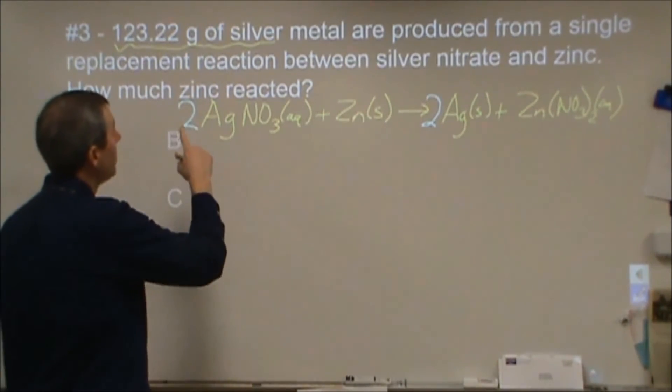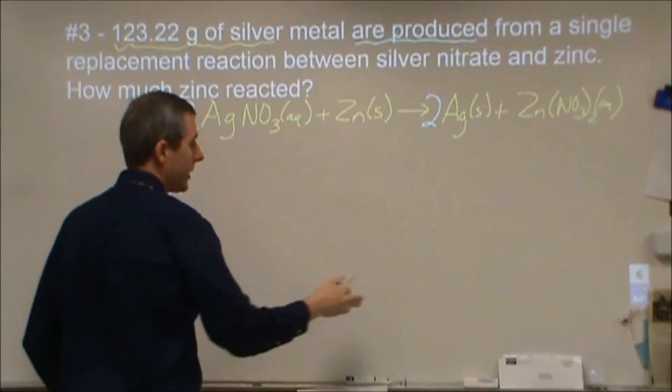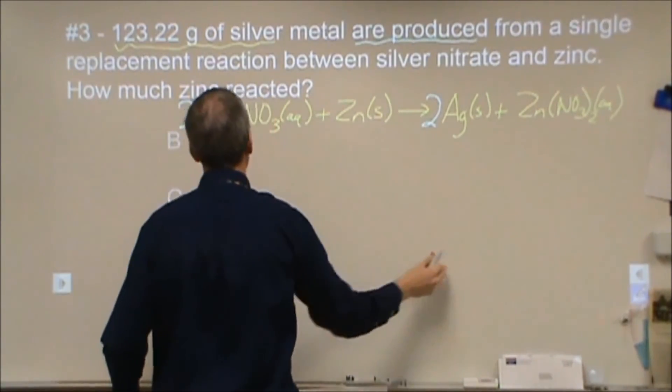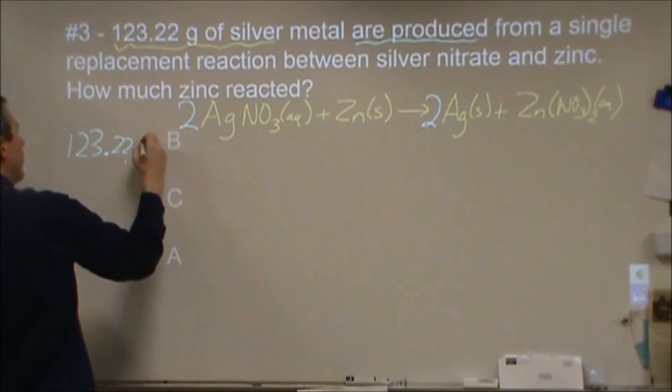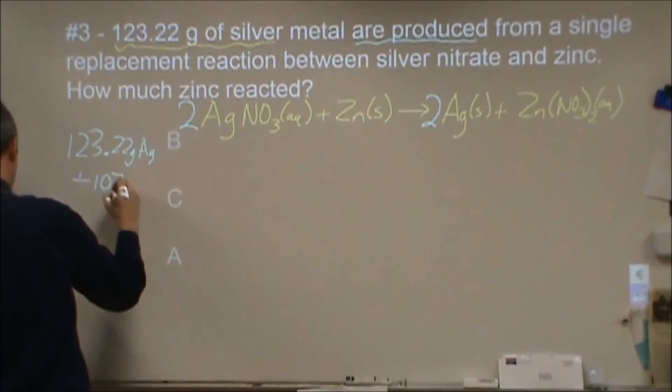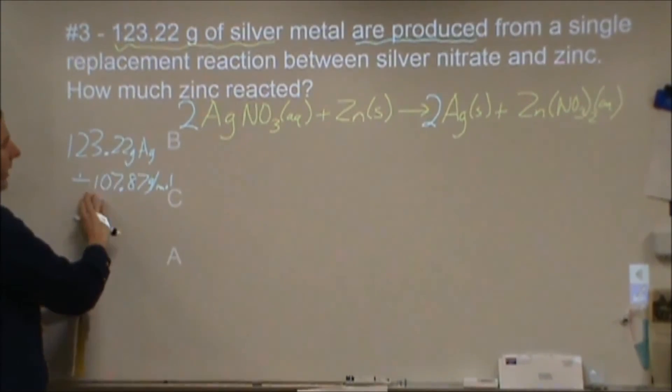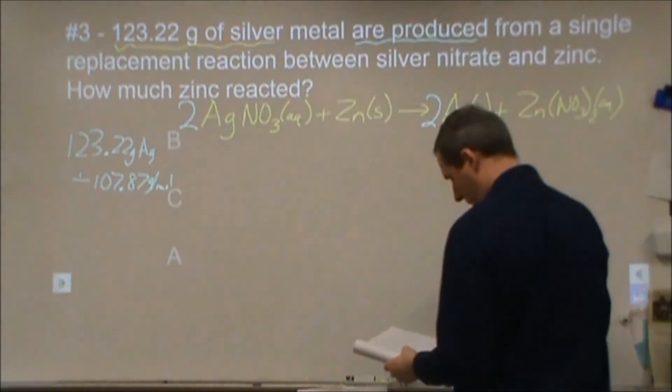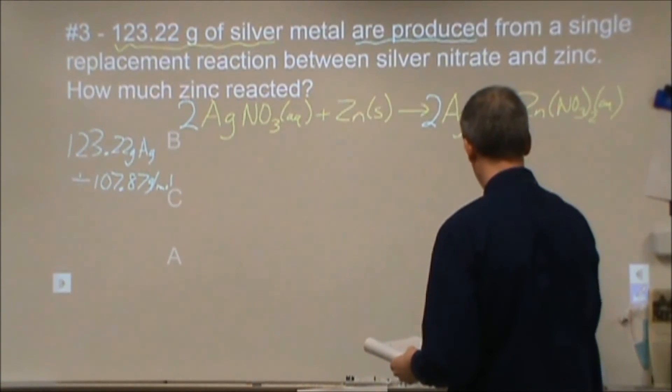The 123.22 grams of silver metal are produced, which means that we need to change this into moles like we did before, but that's actually going to be after the reaction has taken place. So we're going to put that in here. 123.22 grams of silver, we're going to divide that by the molar mass of silver, which is 107.87. In terms of thinking really hard here, we've got 123, 107 grams per one mole, so we're going to have a little over a mole. Our after for silver comes out to be 1.1423 moles produced.